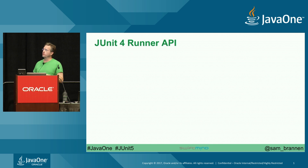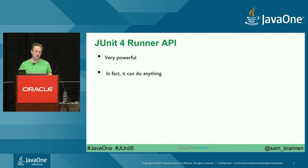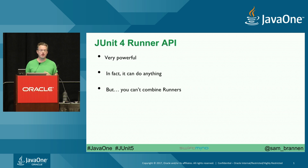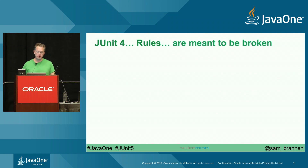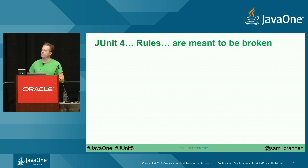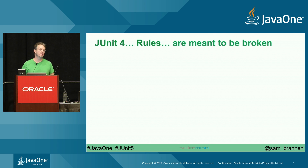In JUnit 4, there's this main concept of a runner API. It's very powerful — you can do anything with it — but you can't combine runners. For example, if you ever tried to use the parameterized runner from JUnit and the Spring runner from Spring, it's a no-go, it doesn't work. So you might think JUnit 4 rules, or you might read it as rules are meant to be broken — and I would say JUnit 4 rules were always meant to be broken.